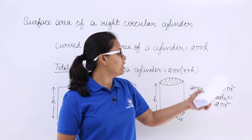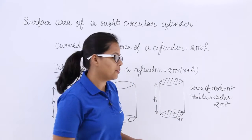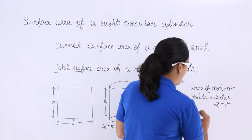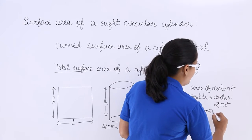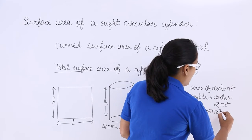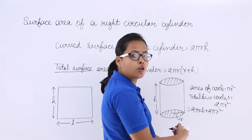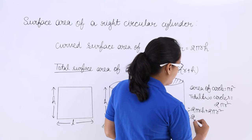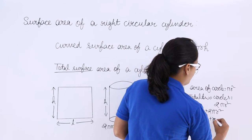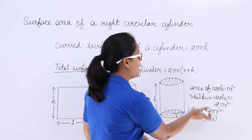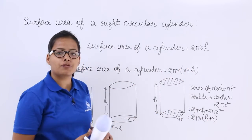So two circles have the area of 2πR². What you will do is add this area to the curved surface area: 2πRh + 2πR². Now, let's take 2πR common, and you are getting this formula. This formula is exactly equal to this formula.